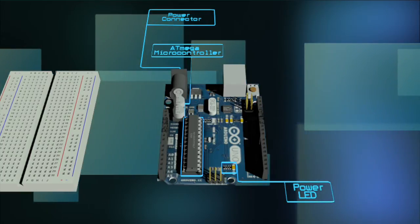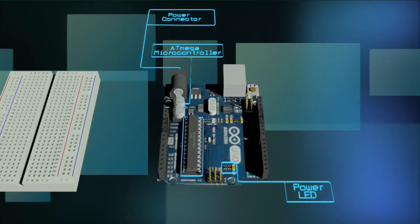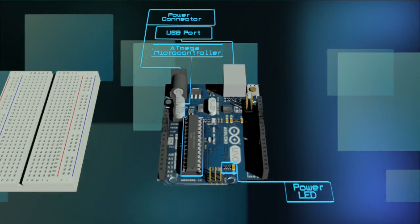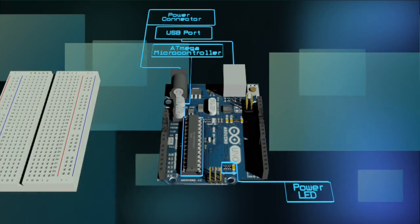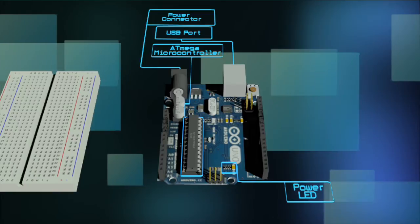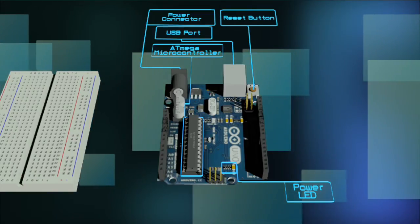At the heart of the Arduino Uno is the AT Mega microcontroller. The USB port is used for powering your Arduino Uno, uploading sketches to your Arduino, and for communicating with your Arduino sketch. The reset button resets the AT Mega microcontroller.